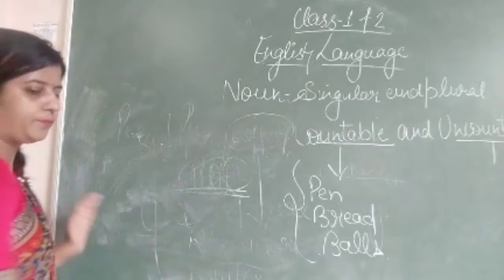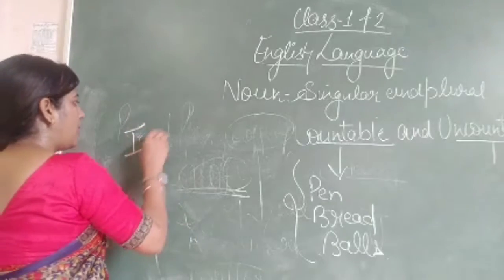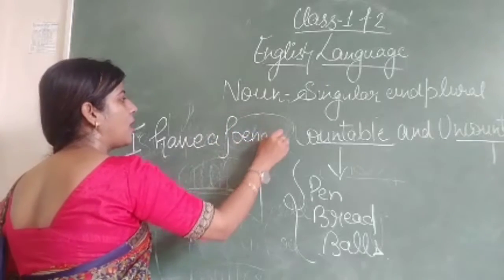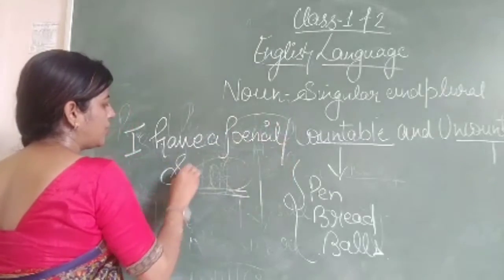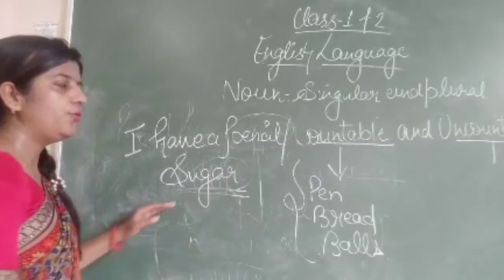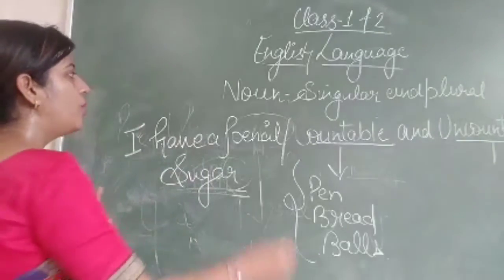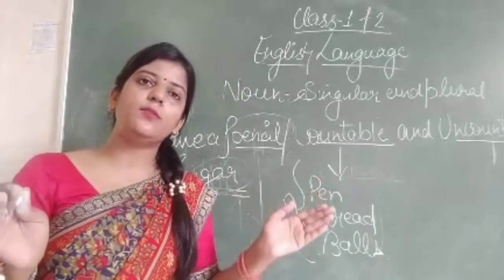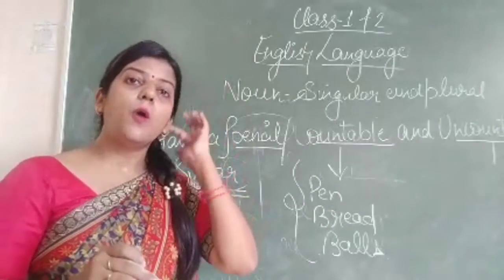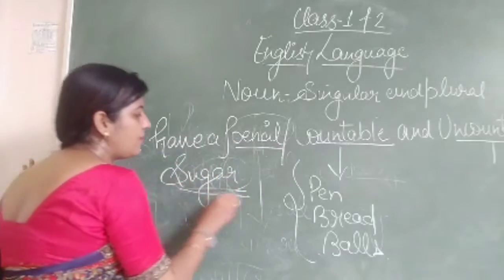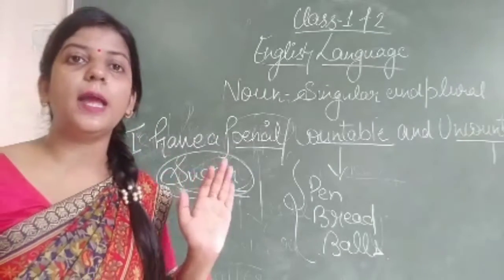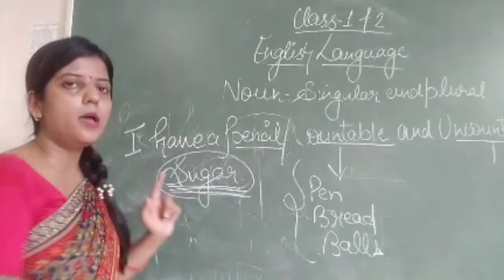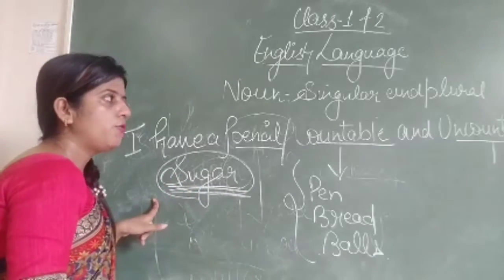Another example: 'I have a pencil and sugar.' If we need to identify the uncountable noun — pencil is a countable noun because even if many pencils are placed in front of you, you can still count them. But sugar, whether less or more, we cannot count it. So sugar is our uncountable noun.